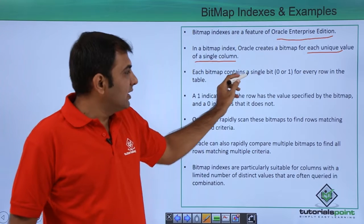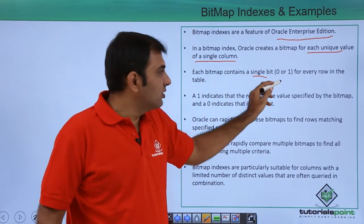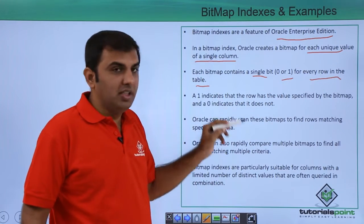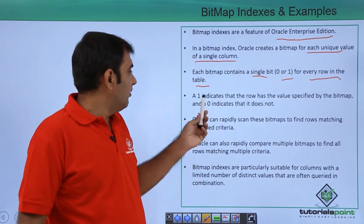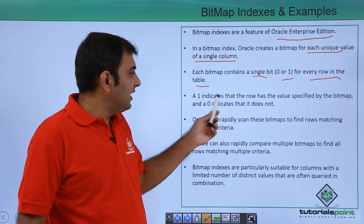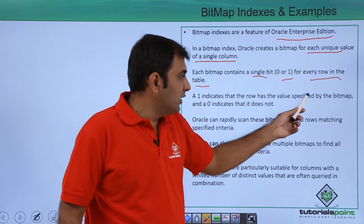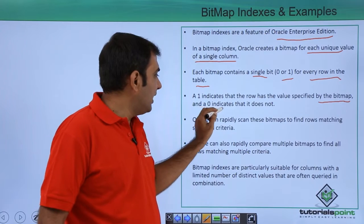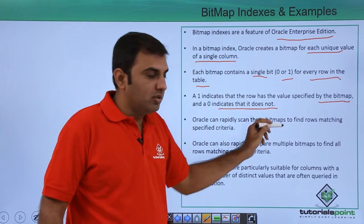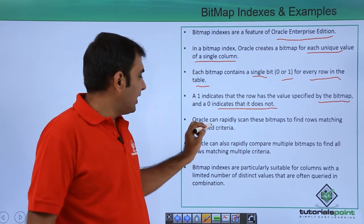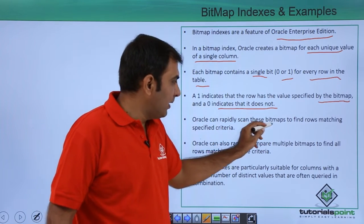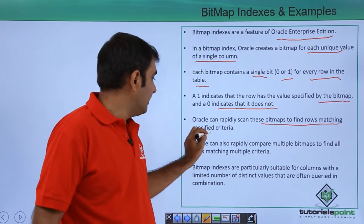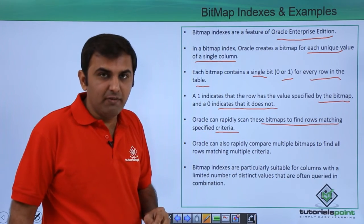Each bitmap contains a single bit, either 0 or 1, for every row in the table. A 1 indicates that the row has a value specified by the bitmap, and 0 indicates that it does not. Oracle can rapidly scan this bitmap to find the rows matching a specific criteria.